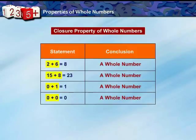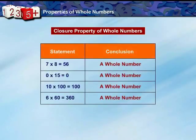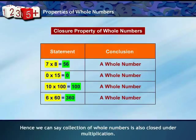Take any two whole numbers and add them. The sum of any two whole numbers is always a whole number. So the collection of whole numbers is closed under addition. This property is known as the closure property of addition for whole numbers. Similarly, the product of any two whole numbers is also a whole number, so whole numbers are closed under multiplication as well.